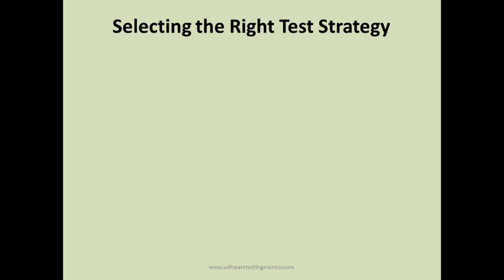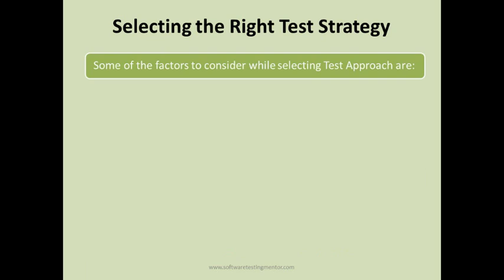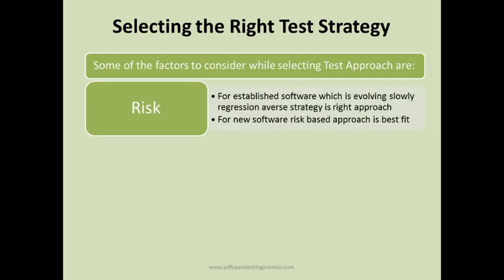How can you select the right test strategy? One factor to consider is risk. For established software that is evolving slowly, regression averse strategy is the right approach. For example, if you have software established over six years with new features coming every three to four months, there will be a huge amount of regression testing involved. In this case, regression averse strategy is best because manually executing a large regression suite every three months is very difficult. For new software, a risk-based approach is the best fit.